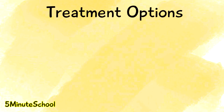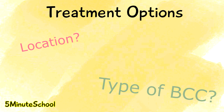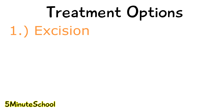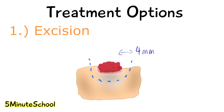In terms of treatment of basal cell carcinomas, it depends on a variety of factors, including where the carcinoma is located, the type, the age of the patient, prior treatment history, and the overall health of the patient. One option is excision, where the tumor is excised with around 4mm of margins and the tissue is sent to the pathology lab. This is usually done on the extremities or areas of the trunk.